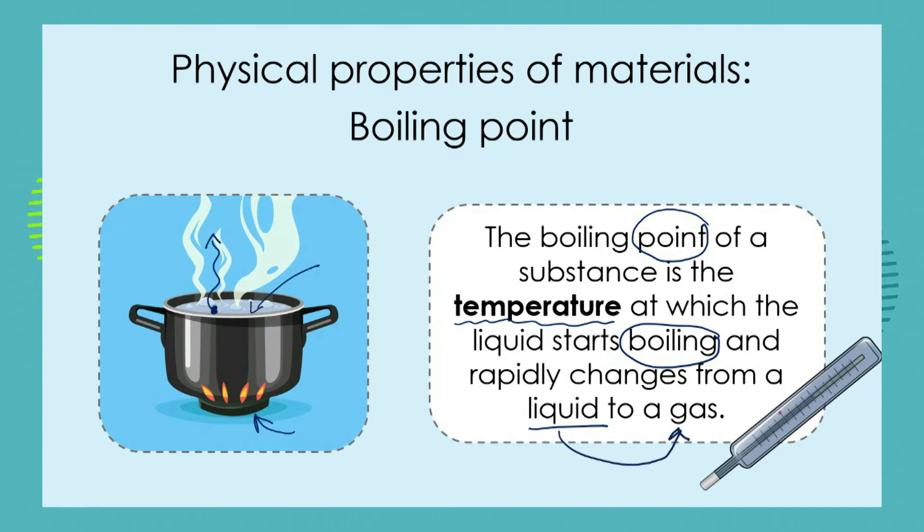Heat is energy that we can add to a substance or take away from a substance. Boiling point refers to a particular measure of heat that has been added to a substance in order to bring it to the boil — meaning the liquid changes into a gas. That phase change or state change is called evaporation.